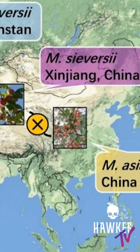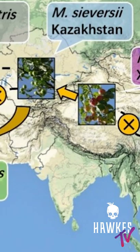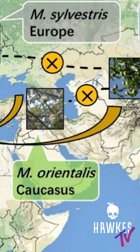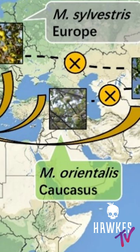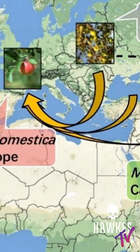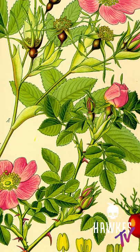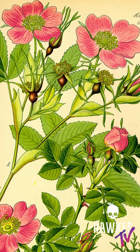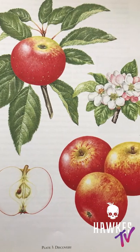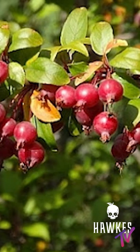Malus is a genus of about 30 to 55 species of small deciduous trees or shrubs in the family Rosaceae, including the domesticated orchard apple, Malus domestica, also known as the eating apple, cooking apple, or culinary apple. The other species are commonly known as crab apples or wild apples. The genus is native to the temperate zone of the northern hemisphere.